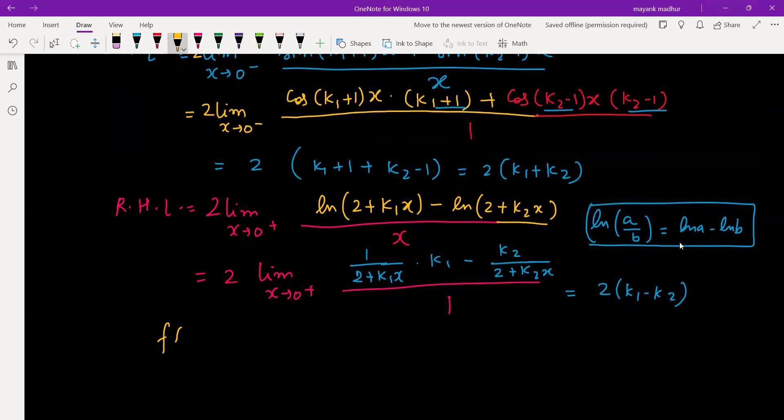Now what is f(0)? f(0) is given as 4, so that must be equal to 2(k₁+k₂) and it must be equal to 2(k₁-k₂).